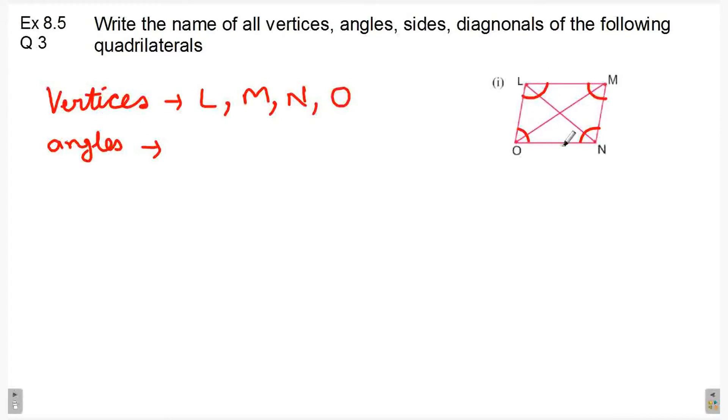Now, hum in angles ke name using vertex only bhi likh sakte hai, ya phir saath wale 2-2 points ka use karke bhi likh sakte hai. So, simple way me hum log inko kaise represent kar sakte hai? Angle L, Angle M, Angle N, Angle O.